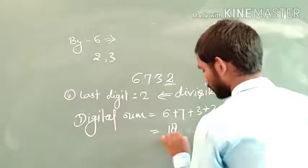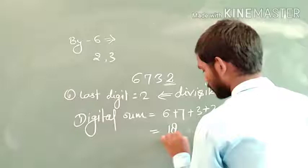For verification, let us check this number by actual division. Dividing 6732 by 6, we can see that this number is indeed divisible by 6, as shown by the actual division method. I hope the divisibility by 6 is clear to everyone.